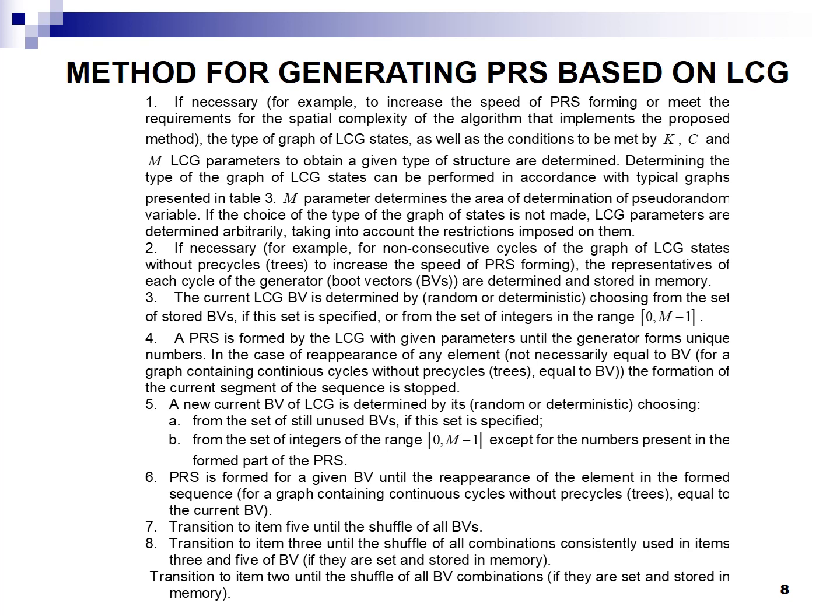A method for generating a pseudorandom sequence of numbers based on the linear congruential method is presented. The proposed method allows performing concatenation not only of separate and disjoint cycles in the linear congruential generator graph, but also of pre-cycles or trees if they are contained therein. The method allows generating a uniformly distributed number regardless of the topology of the graph of generator states, and consequently minimizing the time spent on choosing its parameters.